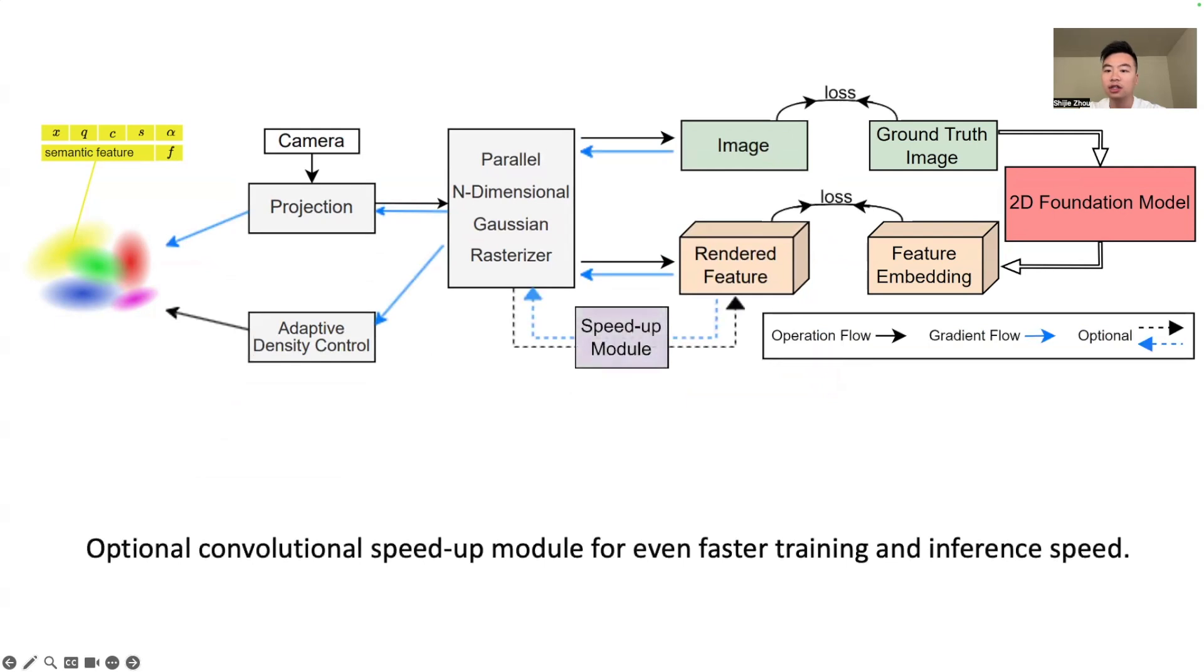In many cases, end-to-end rendering a very high-dimensional feature is very computationally expensive and unnecessary. For example, the LSEG clip feature has dimension 512, and the SAM feature has dimension 256. So we introduced an optional speedup module, which consists of a convolutional layer with 1x1 kernel to up-sample the feature dimension.